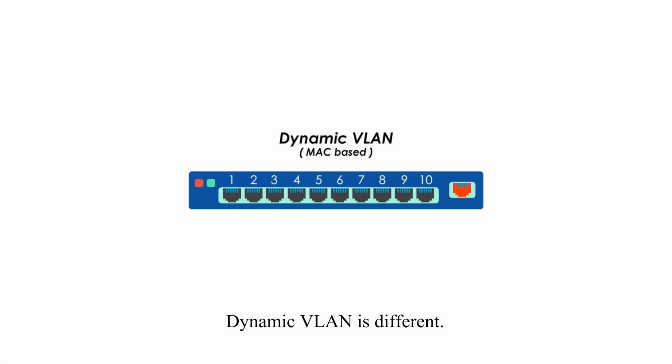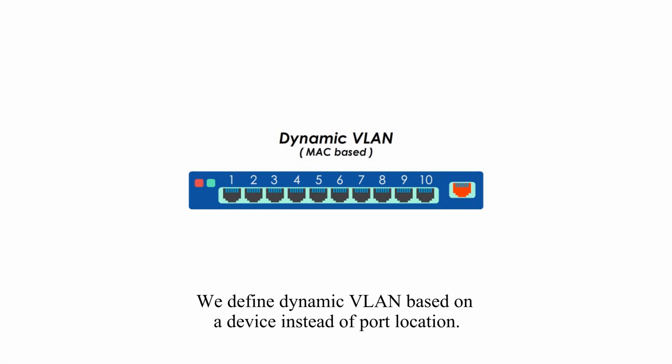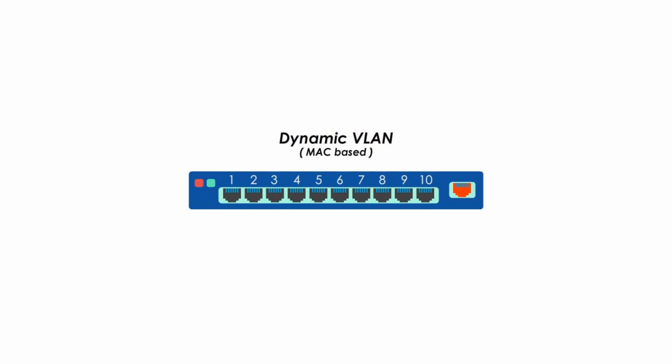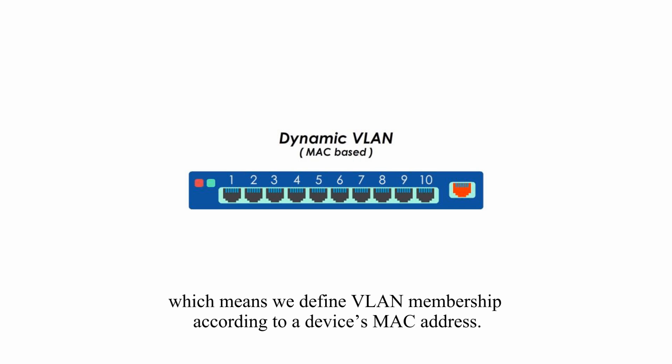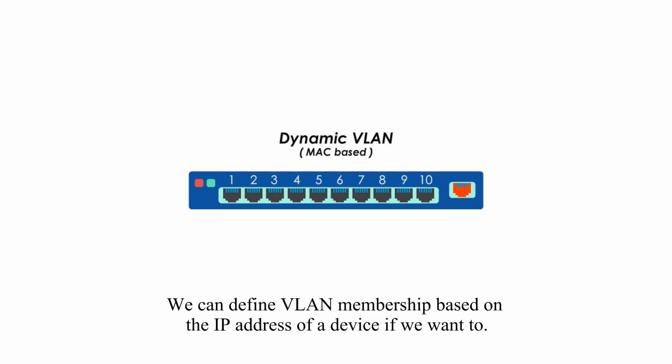Dynamic VLAN is different. We define dynamic VLAN based on the device instead of port location. Dynamic VLAN is usually MAC-based, which means we define VLAN membership according to device MAC address. But we can also define VLAN membership based on the IP address of a device if we wanted to.